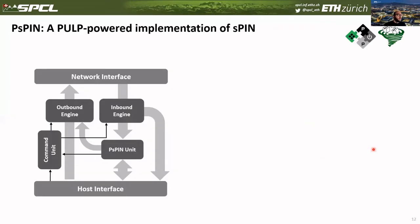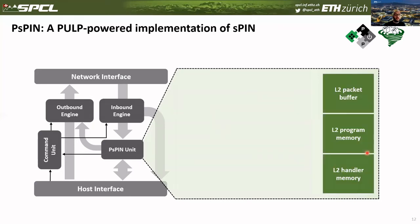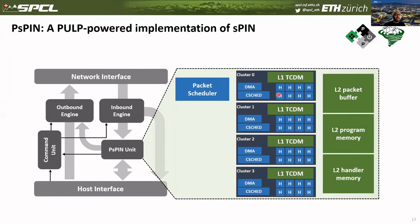What we propose in this work is a hardware implementation of the SPIN programming model designed following the principles we just discussed. We define a PSPIN unit on the accelerator. On the accelerator we have a set of on-NIC memories: a packet buffer for incoming packets, a program memory for handler code, and a handler memory for handler state. We have a scheduling unit that decides on which cluster a packet should be processed. Inside each cluster we have a set of HPUs, a fast-access scratchpad memory — about one megabyte with single-cycle access — and a DMA engine to move memory from the slower but larger L2 memories to on-cluster memories, plus a cluster scheduler.